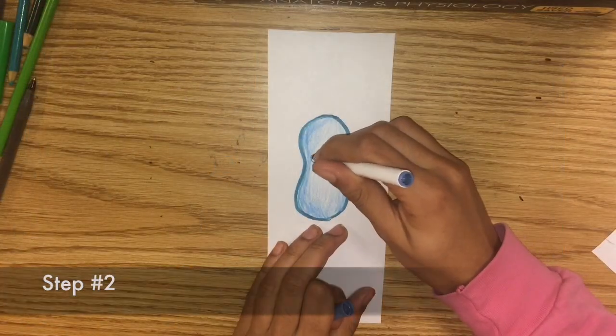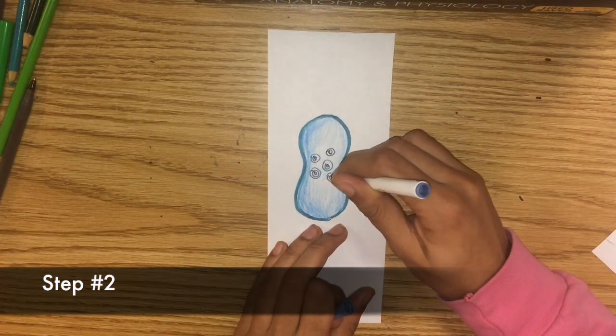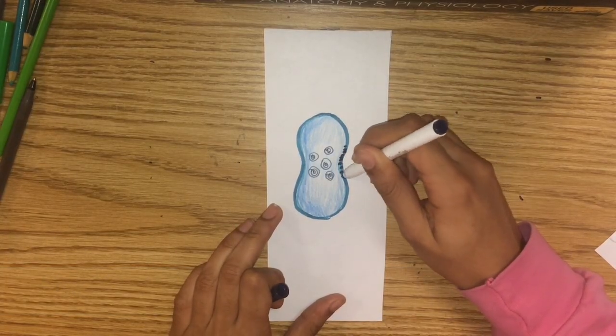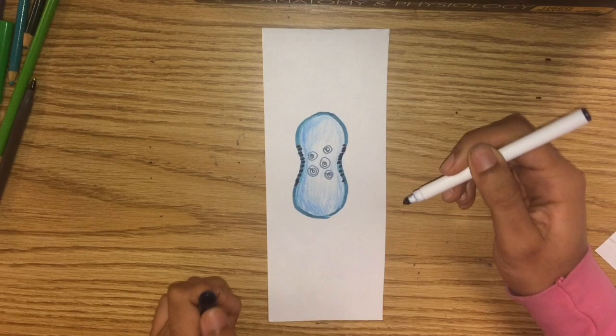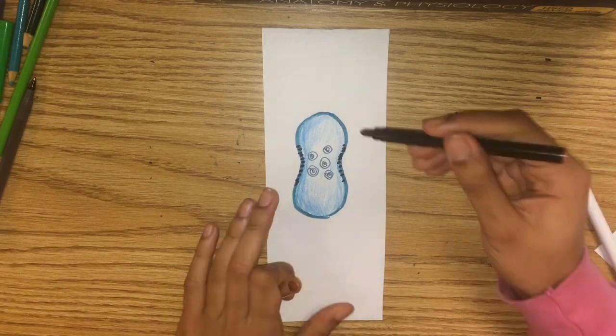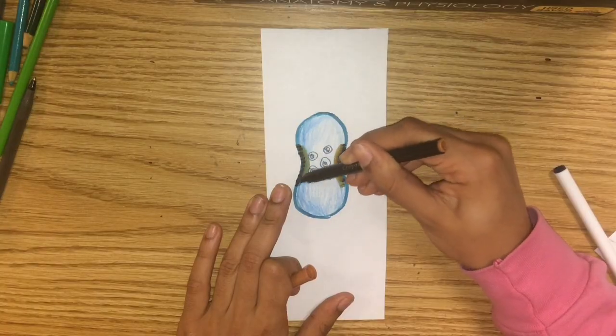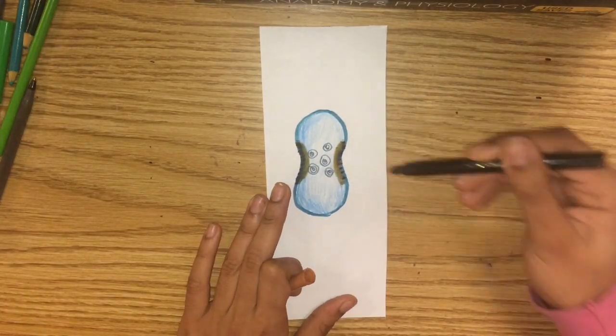In step two, the primary ossification center starts to form. So we've got some chondrocytes just hanging out in there, and the mesenchymal cells, which are within the perichondrium, differentiate into osteoblasts. The osteoblasts form bony tissue all the way around the diaphysis, creating a bony collar.